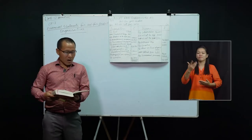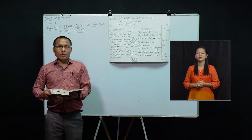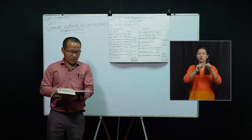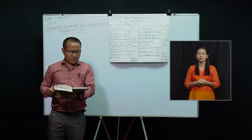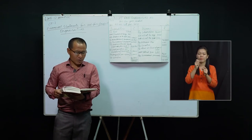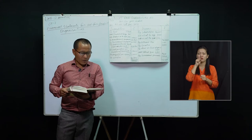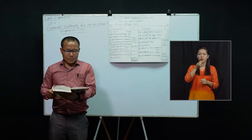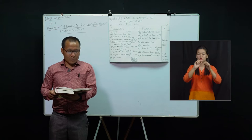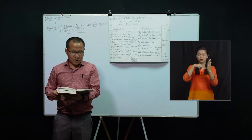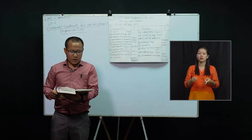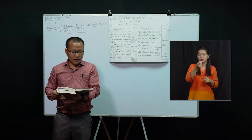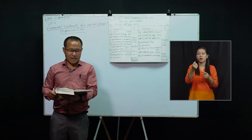Welcome back. Now we will try to solve question number 42, that is page number 1.90. From the following information and receipts and payments account of Prince Club, prepare income and expenditure account for the year ending 31st December 2012 and a balance sheet on that date.